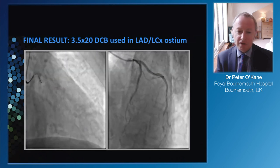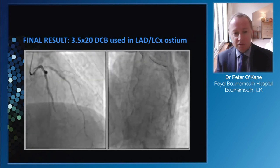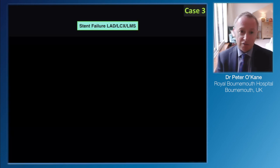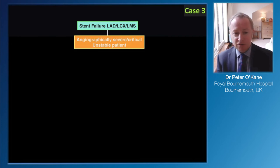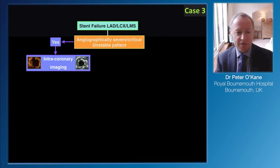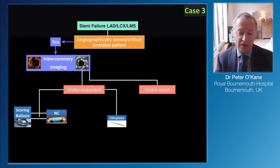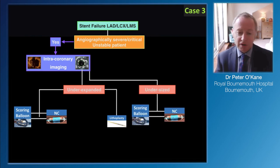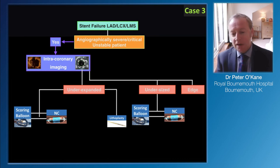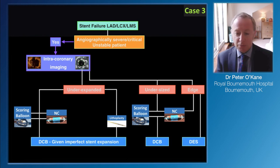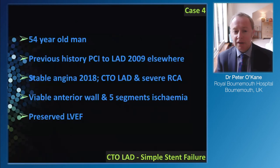Bypass might be another option for this patient if they fail to do well with the implanted stents. Through the algorithm: angiographically critical, go straight for intracoronary imaging after pre-dilatation, discover under-expansion, use scoring and non-compliant balloons, but it's really the IVL treatment that helps to get the stent expanded to the point we can leave the case without any new stents proximally - just some distally to cover new disease, and drug-coated balloons in the left main.